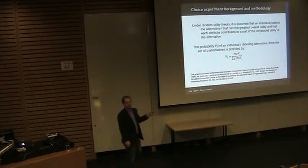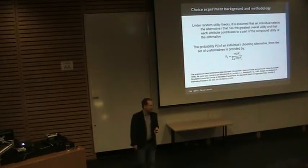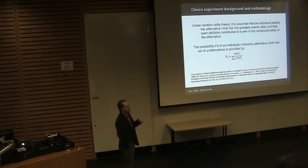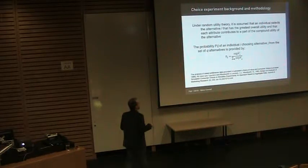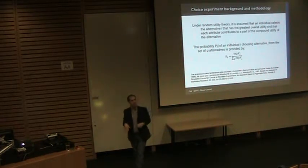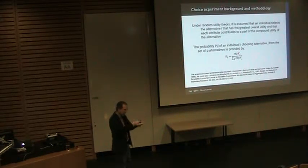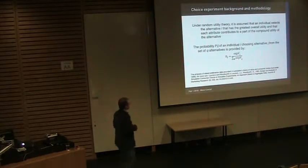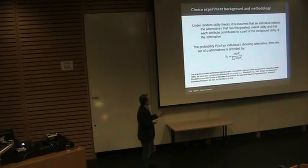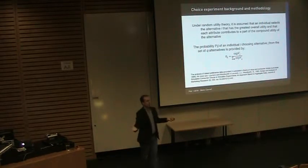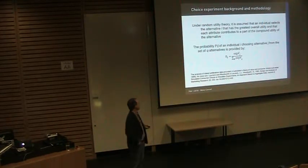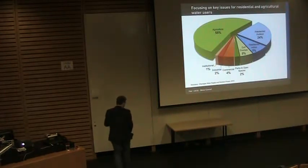Under random utility theory, we can assume that an individual selects the choice that combines all the value they get from how that choice is described — the compound utility of an alternative. For example, everything that makes up a car has a compound value to you. We can break apart those features and say: the probability of choosing choice J is its ratio to all the value you get from all those different attributes.